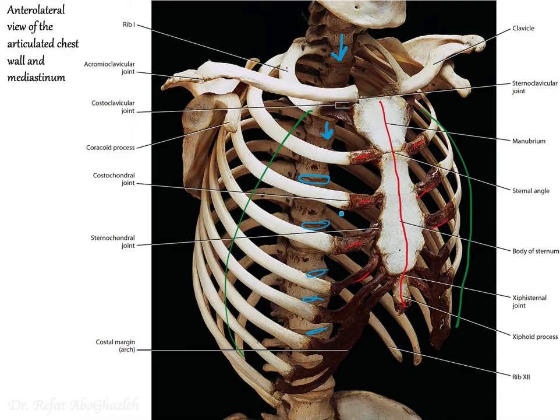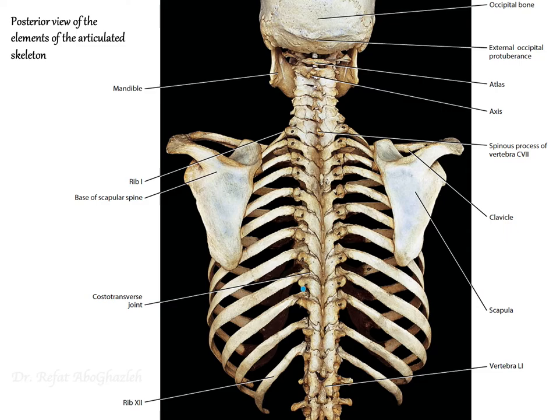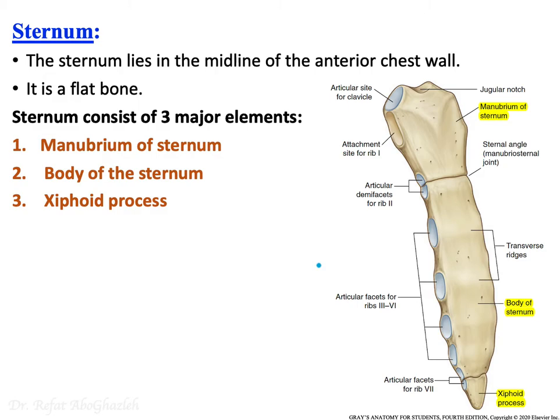In the posterior view of the thoracic cage you can see the spinous processes of the vertebral column, and particularly the thoracic vertebrae. Look at how the thoracic vertebrae articulate with the ribs posteriorly on both sides at the articulation sites.